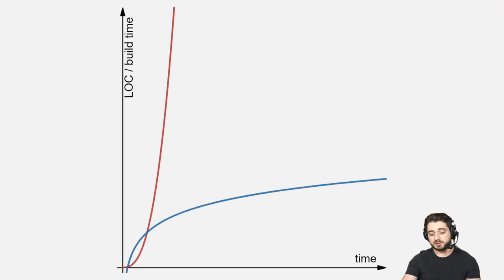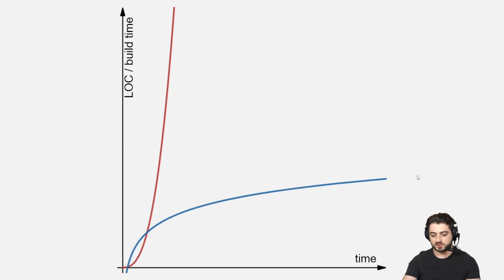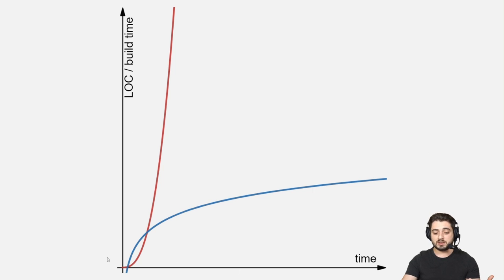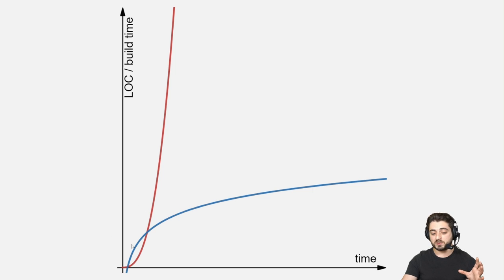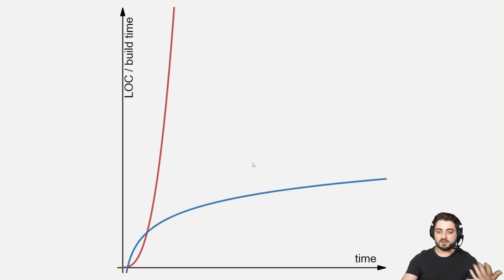People throw around the word 'scalable' all the time, so I want to be concrete. This is a tiny graph — an exponential function and a logarithmic function — with time on one axis, lines of code and build time on the other. Essentially, if everything goes well with your company, you keep hiring more developers and your codebase keeps growing. The goal of the architecture is that the build time function does not belong to the same complexity class as your codebase size function. Ideally it should be logarithmic, but I'll even take linear at this point.